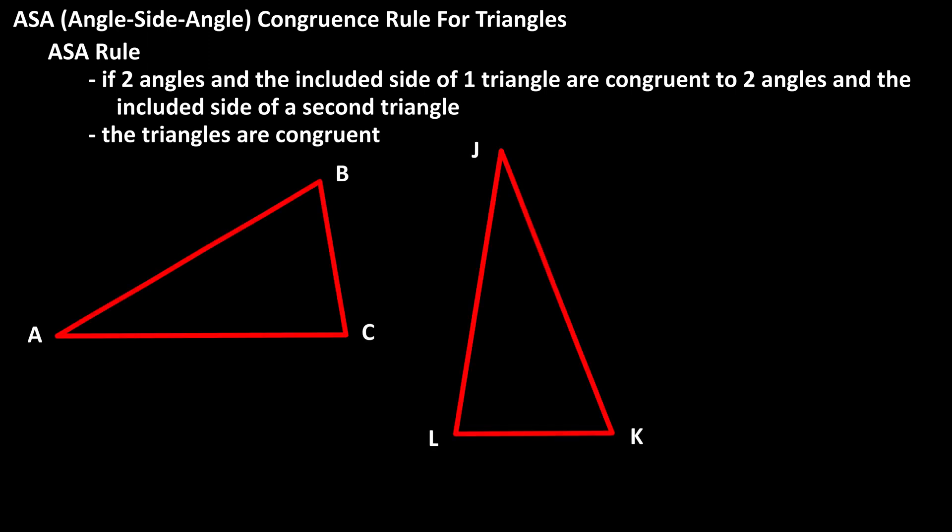As an example, let's say we have two triangles, and we are given that angle A is congruent to angle J, angle B is congruent to angle K,